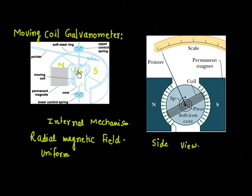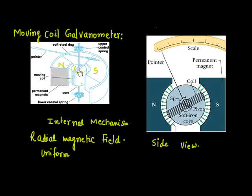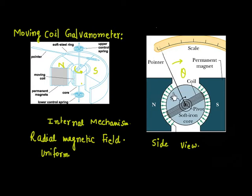Now, if you connect this galvanometer with a current, there is a current that flows through this loop. If there is a current, then there is a torque — torque wants to move this coil. But this spring tries to oppose the movement. There is also a pointer attached. So if you apply a current I, the current applies a torque, and if the current I is very high, the torque is high, and correspondingly this pointer moves. After rotating by some angle theta, the spring's restoring torque equals the torque due to the current, and the system reaches equilibrium.